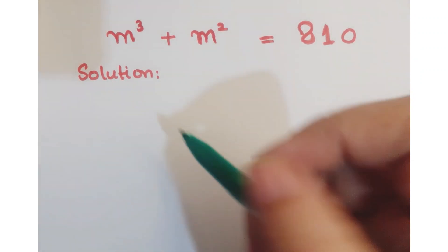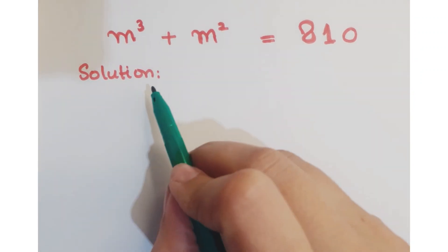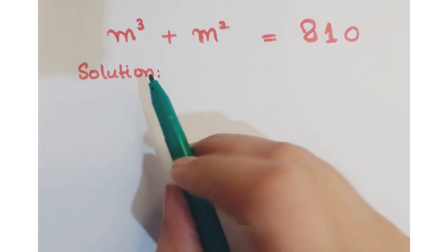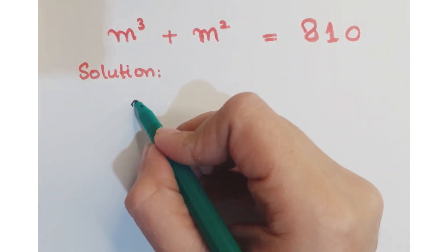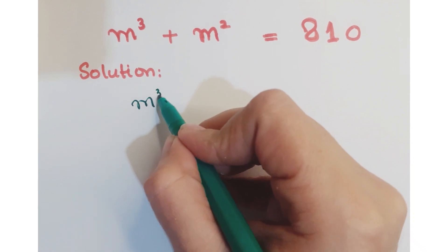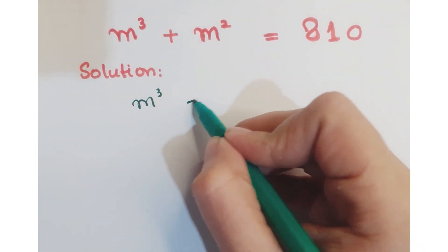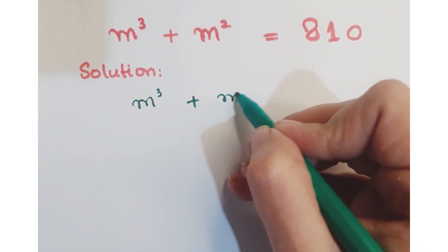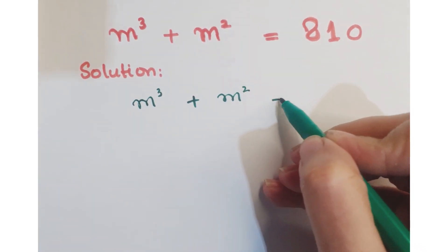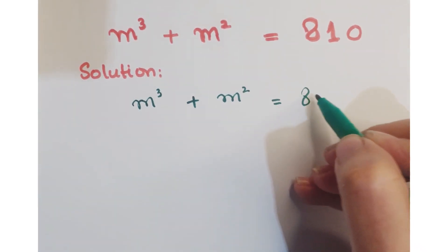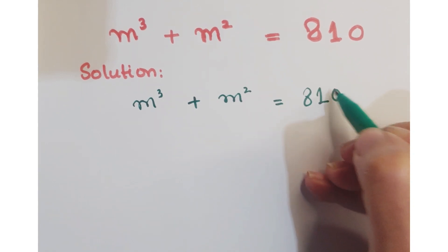Hi guys, look at this cubic equation. The equation is m³ + m² = 810.